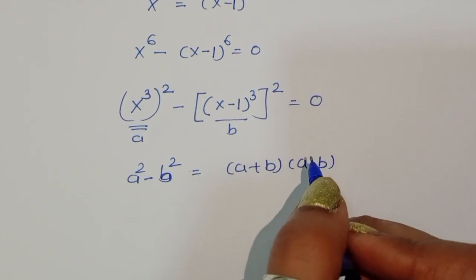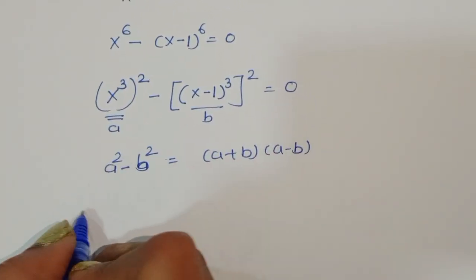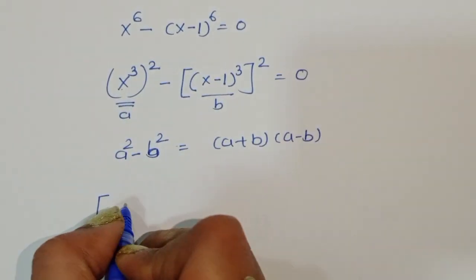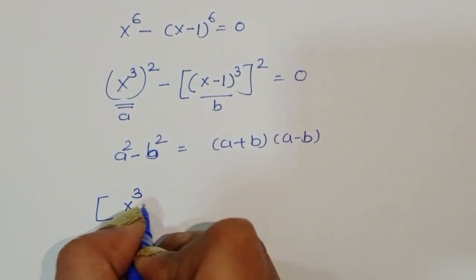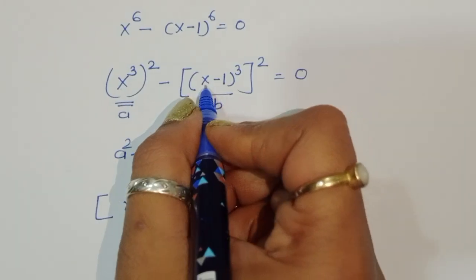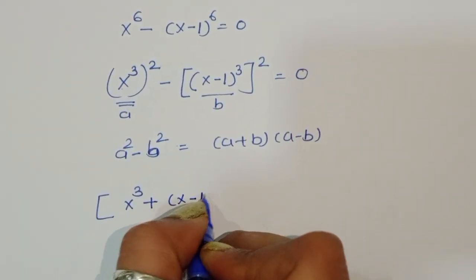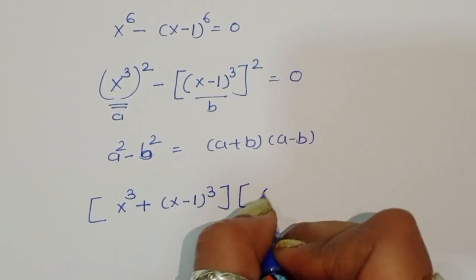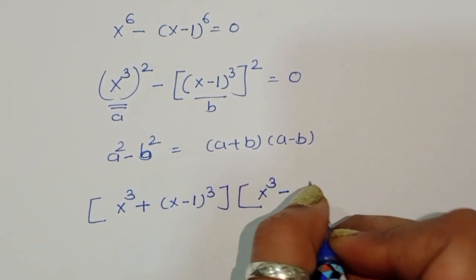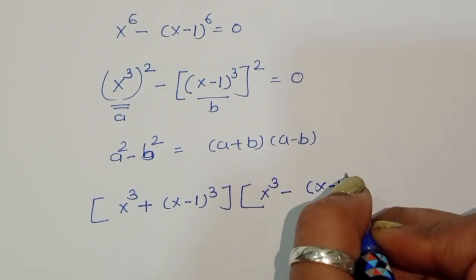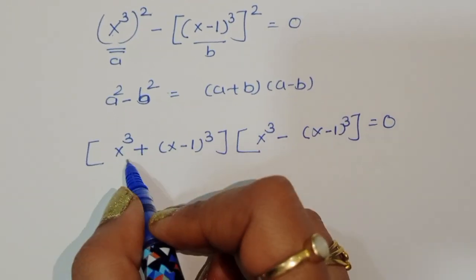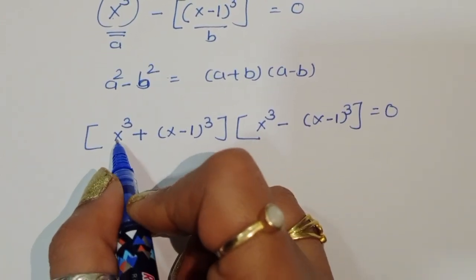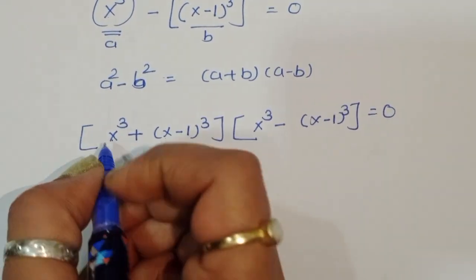Applying the formula, we get (x³ + (x-1)³) times (x³ - (x-1)³) equals 0. The first factor is a cube plus b cube, and the second factor is a cube minus b cube, where a is x and b is (x-1).